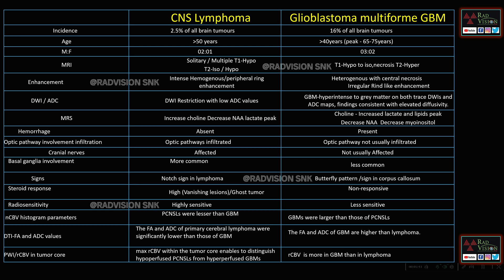Differentiating CNS lymphoma from GBM: age greater than 50 years is common in CNS lymphoma, greater than 40 years in GBM; both are more common in males. CNS lymphoma is iso to hypointense on T1 and iso to hypointense on T2, whereas GBM is hypointense on T1 but hyperintense on T2. Enhancement is intense and homogeneous in CNS lymphoma, while GBM shows heterogeneous enhancement with necrosis, hemorrhage, and irregular rind-like enhancement. DWI shows restricted diffusion with low ADC in lymphoma; GBM lesions are hyperintense to gray matter on both DWI and ADC maps, consistent with elevated diffusivity.